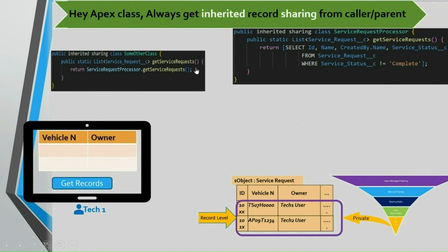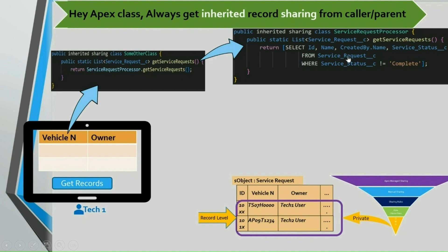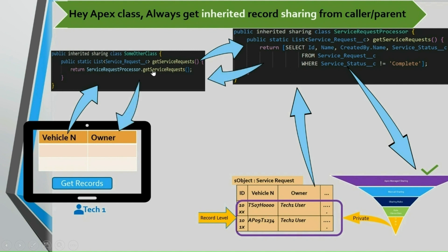Finally, in this combination, the caller also has inherited sharing and our actual class also has inherited sharing. When tech1 user clicks on get records, it invokes the caller method and the transaction starts from there. When inherited sharing is used and the transaction starts from that class, the mode becomes user mode. This caller then invokes our actual class, which also has inherited sharing, so it inherits user mode from the caller. The SOQL runs in user mode respecting record level access, returning only one record, which is displayed in the UI.